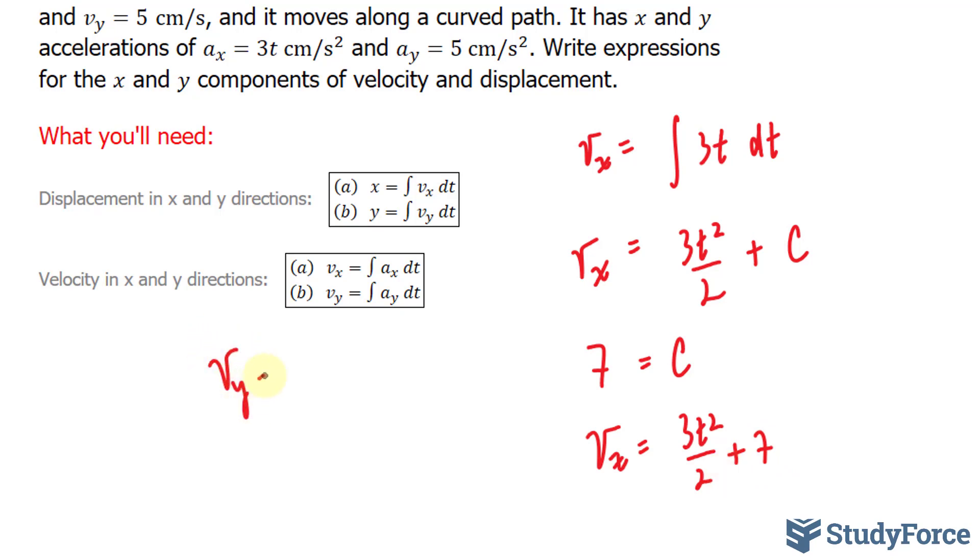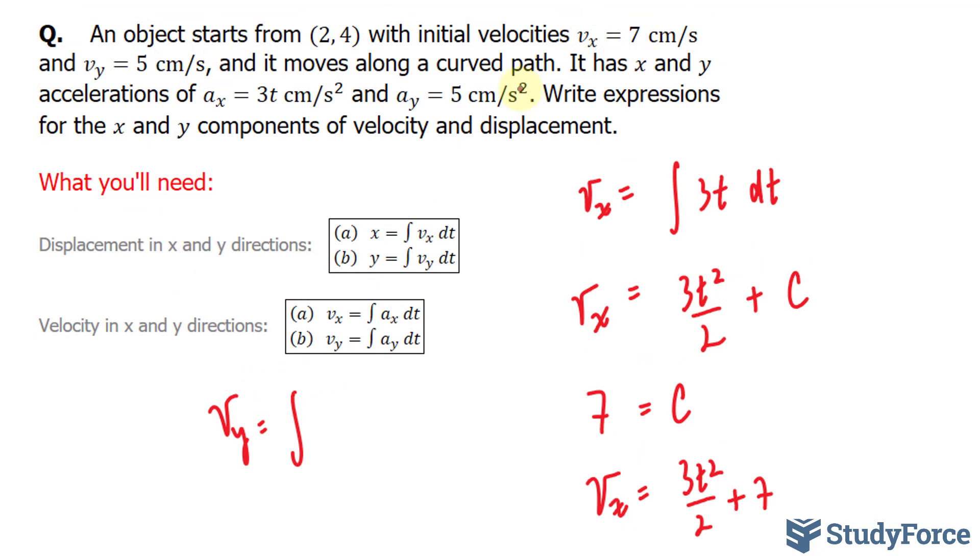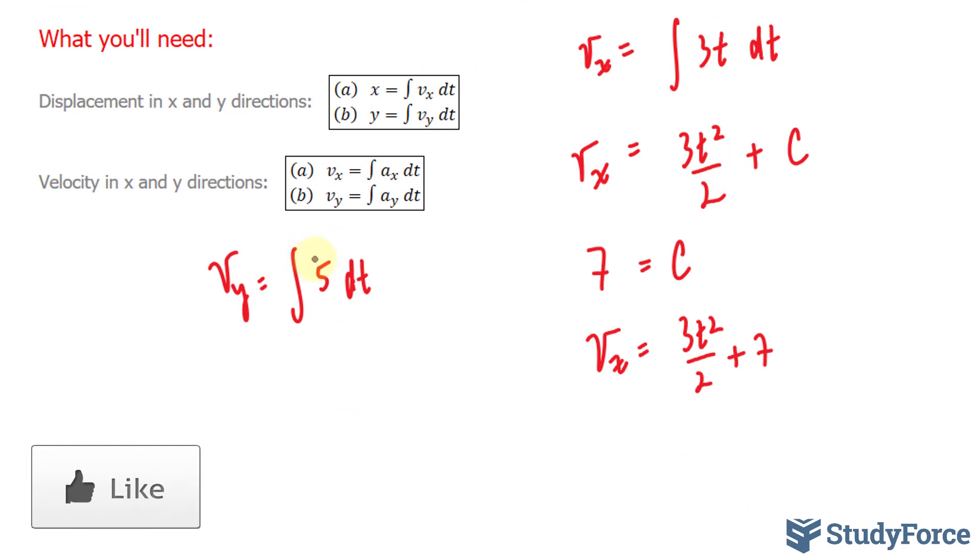v_y equals the integral of our function 5 dt. The integral of this, we'll take this 5 outside of the integral. The integral of dt is simply t. So we end up with v_y equals 5t plus c.